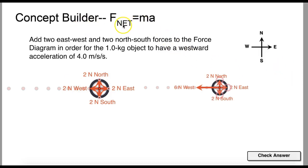Hey, this is Horner, and this is the concept builder F_net = ma. This one's kind of fun to do. It's very interactive, things flash, and you can make the arrows longer and shorter.